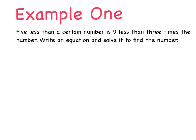Okay, let's look at our first problem. So, example one. Five less than a certain number is nine less than three times the number. What? That doesn't even make sense. Let's read it again. Five less than a certain number is nine less than three times the number. Okay, now I've read my problem a little bit more carefully. It does seem to make a little bit more sense. So, that was step one, read.